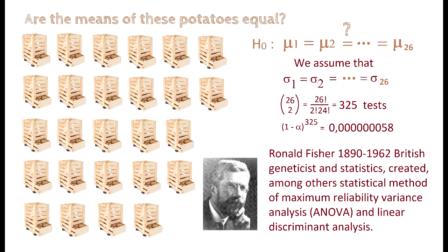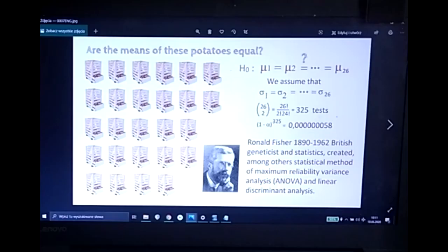In this case, if we assume the variances were equal, he had to perform 26 choose two, giving 325 tests. And the certainty level, if alpha is 0.05, in this case would become, look, nearly zero. So it doesn't really make sense to check pairwise. We have to invent something else.